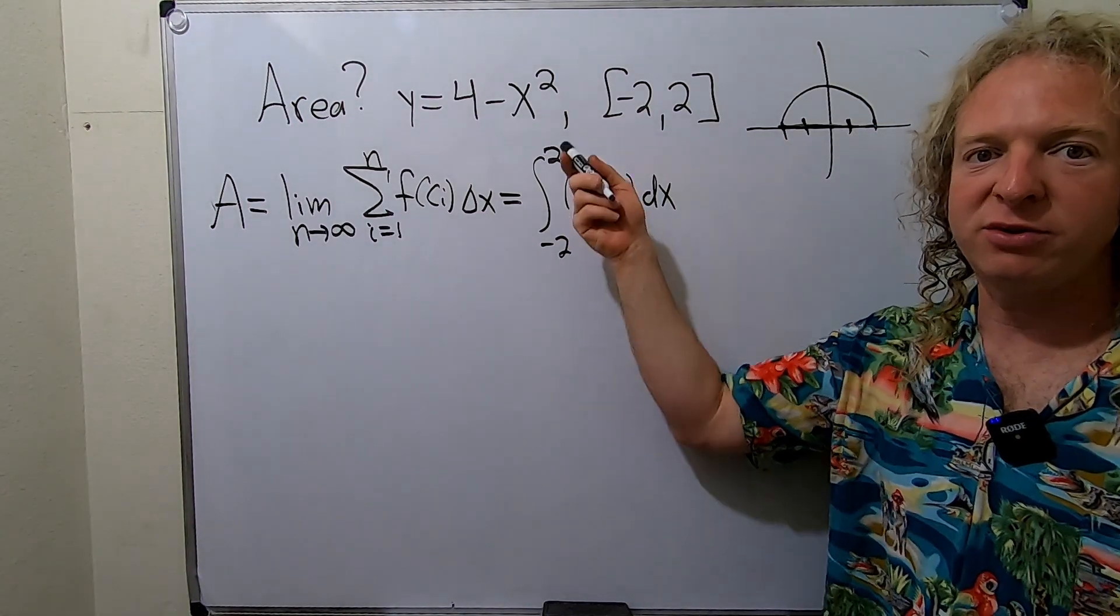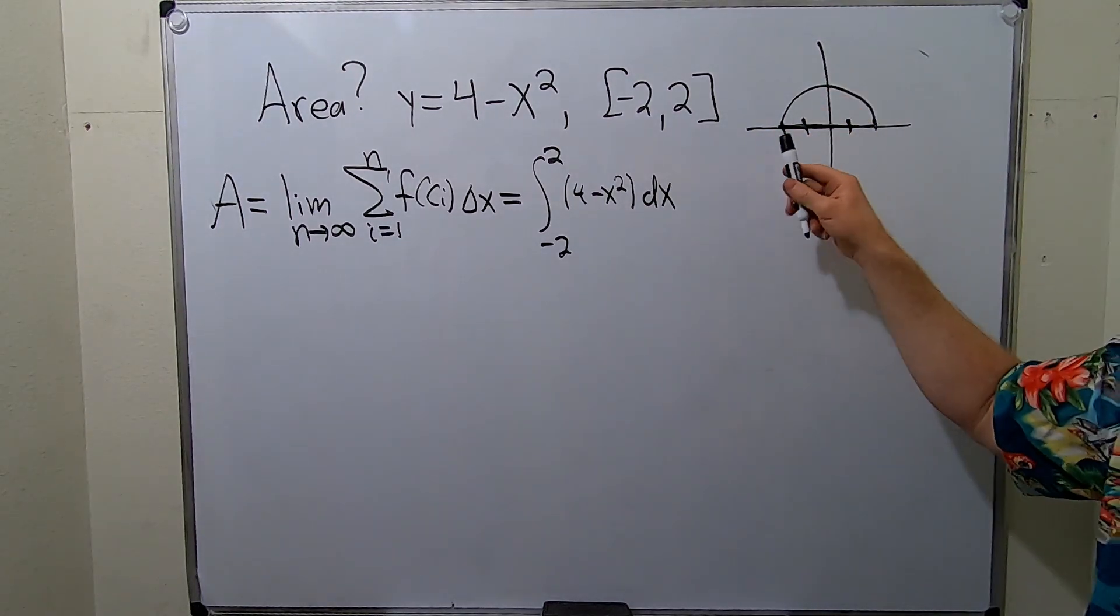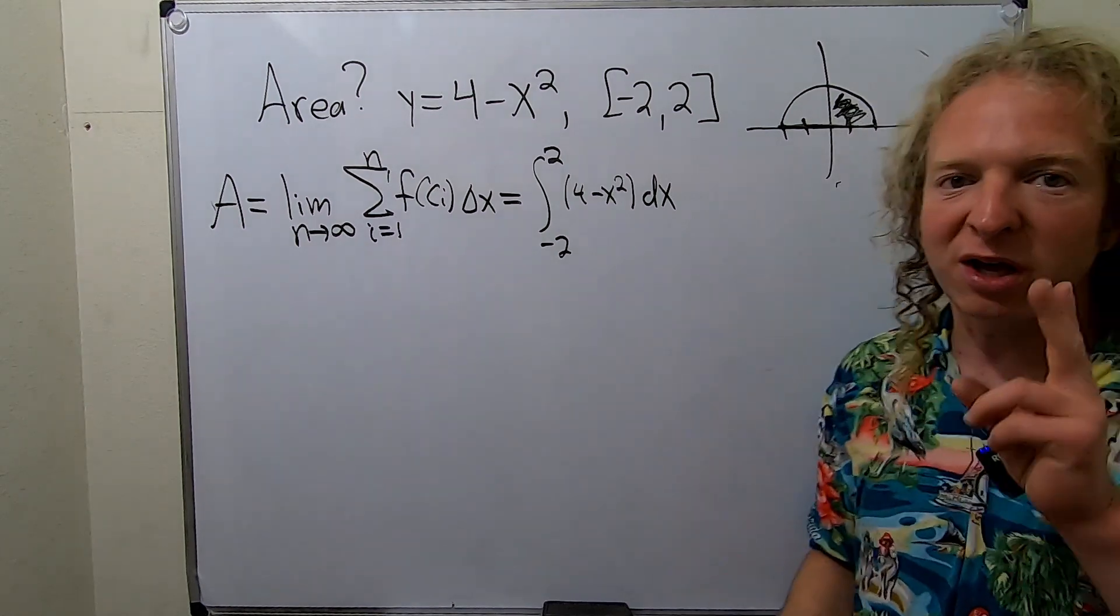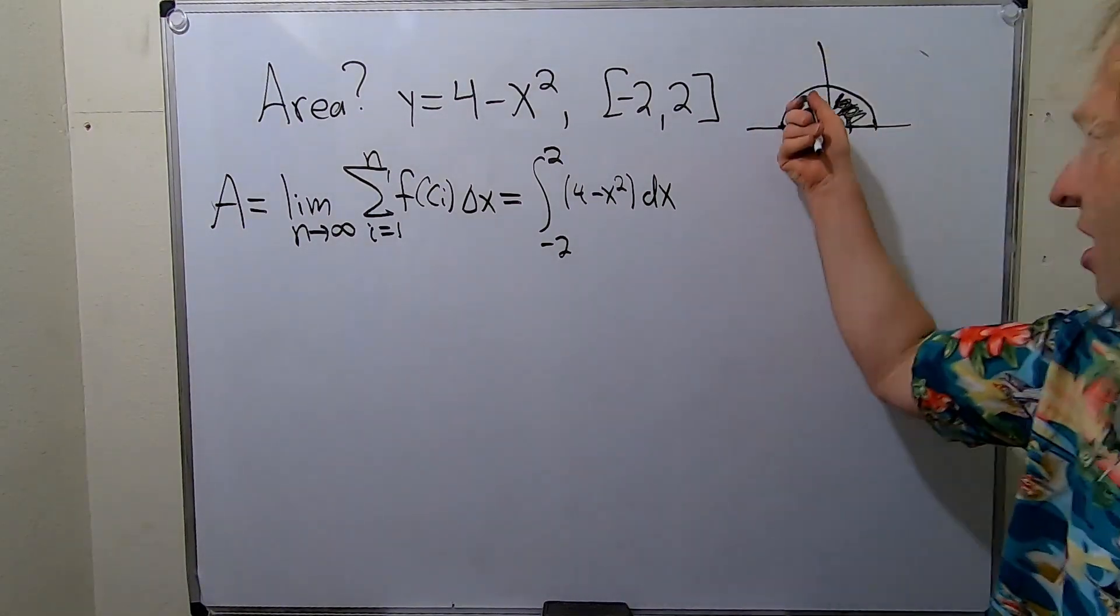So notice that we're going from negative 2 to 2. So instead of doing that what we can do is we can just find this area and then multiply the answer by 2 because these areas are the same.